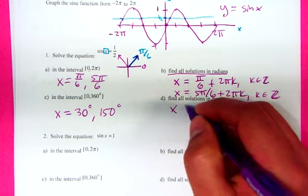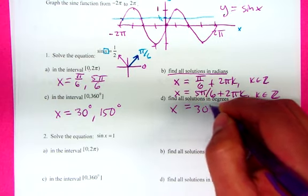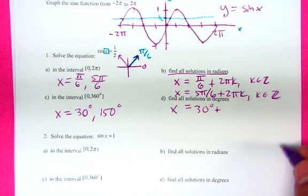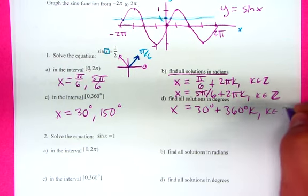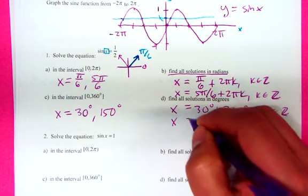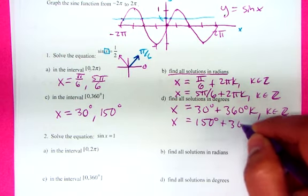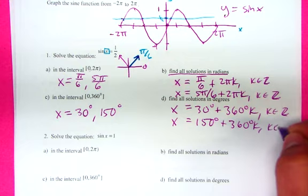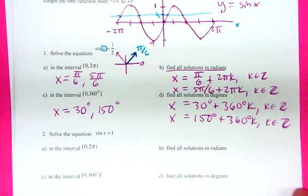In degrees, we just do x equals 30 degrees plus 360 degrees k. Very good. Where k is any integer, and 150 degrees plus 360 degrees k where k is any integer. Okay?